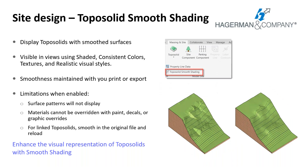There is now an option to smooth the display of toposolid elements, which removes the triangulated appearance of the surface in your model at a project level. Enable the toposolid smooth shading option in the site panel drop-down menu. Smooth shading is visible in views using shaded, consistent colors, textures, and realistic visual styles, and the smooth appearance is maintained when you print and export. Limitations include: surface patterns won't display when smooth shading is enabled, you cannot place a decal on a smooth toposolid, and if the toposolid is in an RVT link, you must smooth it in the original RVT file and reload it.